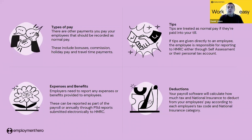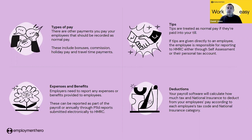Your payroll software will calculate deductions for you such as tax and national insurance that need to be taken from the employee's gross salary, in accordance with the employee's tax code and national insurance category. Other deductions you may see through the payroll include student loan repayments, pension contributions, payroll giving donations, child maintenance payments, and court orders.